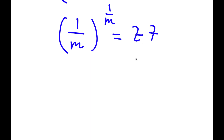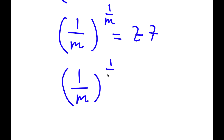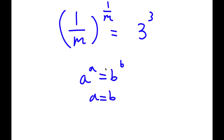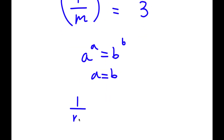Now, 27 is the same thing as 3 to the power of 3. So now I have 1 over m to the power of 1 over m is equal to 3 to the power of 3. And if I have something in the form a to the power of a is equal to b to the power of b, this means that a is equal to b. So in this case, 1 over m is equal to 3.